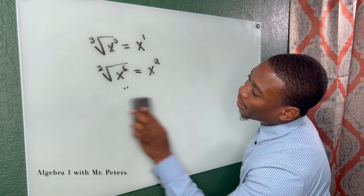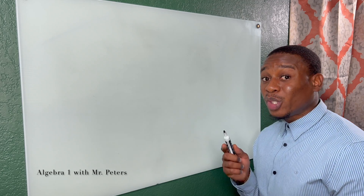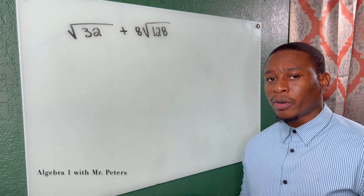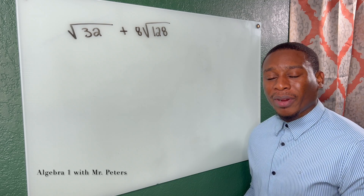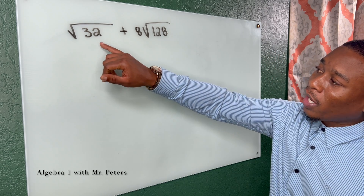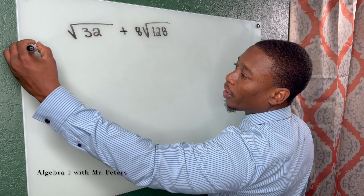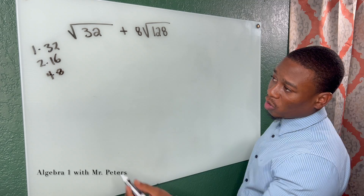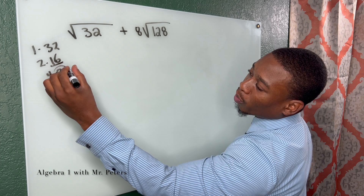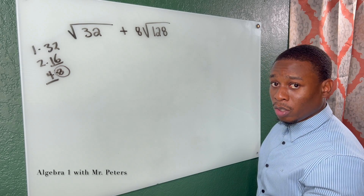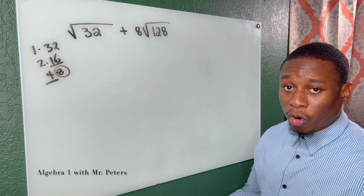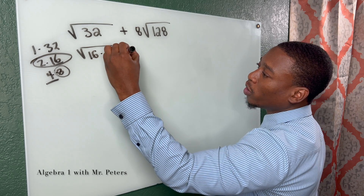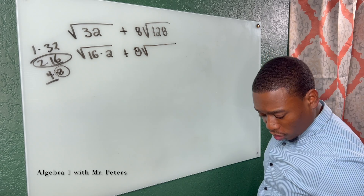Now let's apply this to problems. For simplifying radicals with a number outside and a number under the radical, we break it down using perfect squares. For example, the factors of 32 include 1×32, 2×16, and 4×8. The largest perfect square factor is 16, so we write √32 as √(16×2). Similarly, for 8√128, we use 64×2 as the breakdown since 64 is the largest perfect square factor.